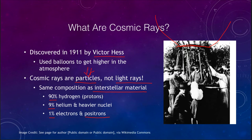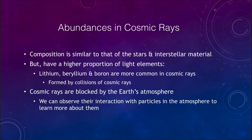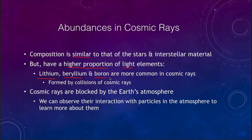There are some differences compared to other matter we've seen. Cosmic rays have a higher proportion of the light elements — not hydrogen and helium, which make up the vast majority of everything, but the three elements in the periodic table that come after them: lithium, beryllium, and boron, which are very rare elements in the universe.